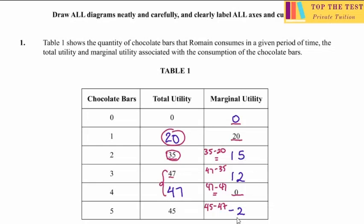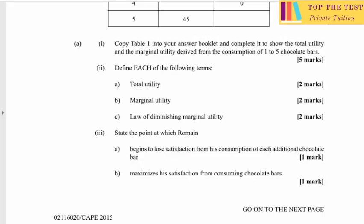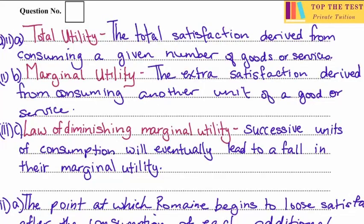Moving on to part 2, we have to define total utility, marginal utility, and the law of diminishing marginal utility for two marks each. Total utility is the total satisfaction derived from consuming a given number of goods or services.